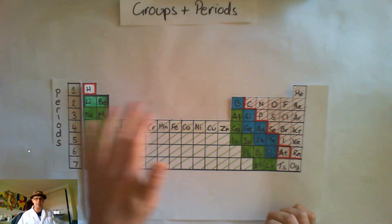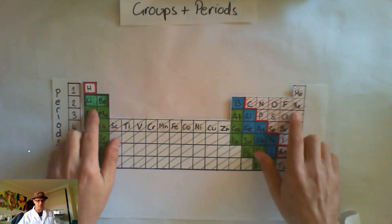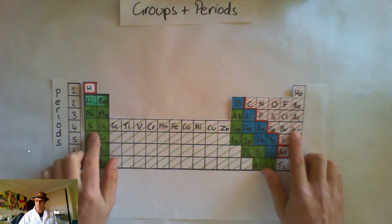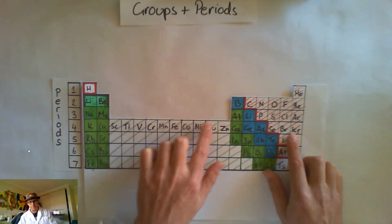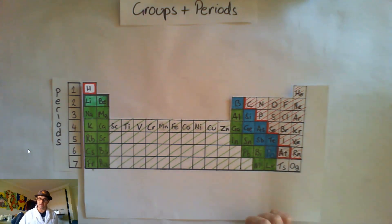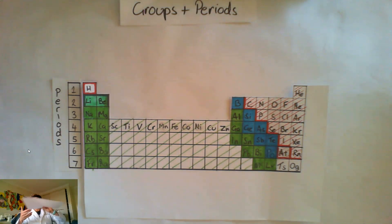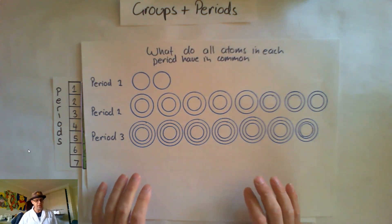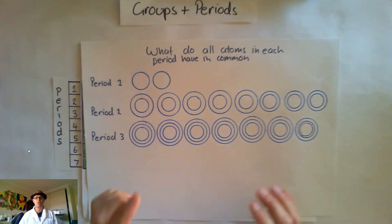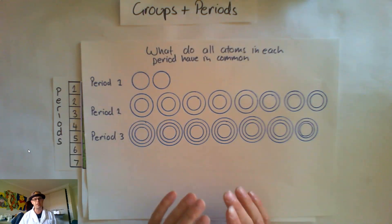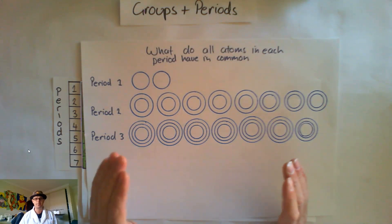In period one we've only got two elements: hydrogen and helium. Period two has eight elements, period three has eight elements. But once we get into period four, we've got 18 elements, which is why there are actually 18 groups. So what do all of the atoms in a period have in common? If you've done the Bohr model you should already know: everything in period one only has one electron shell, or one energy level.